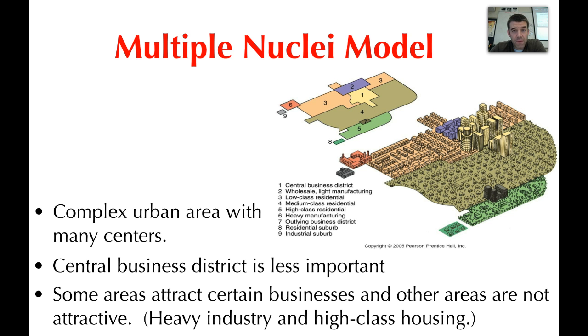These tend to be more complex than the concentric circles model. Depending on the urban area, different types of industry or pockets may have more influence than the CBD itself. For example, if it's a major manufacturing city organized around a factory, there might be more draw toward that than toward the services provided in the CBD.